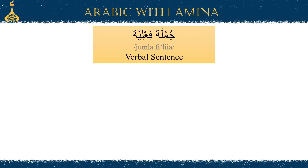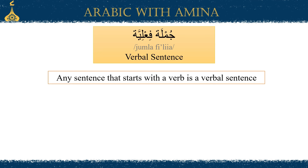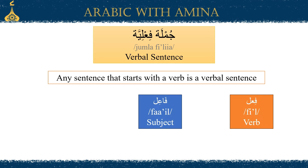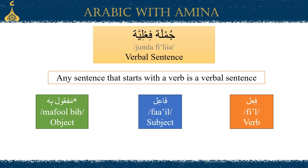Simply speaking, the jumla fi'liya, or the verbal sentence, is the sentence that starts with a verb. There are usually three components to the sentence: the verb or fi'l, the subject known as fa'l, and the object known as maf'ool bi.